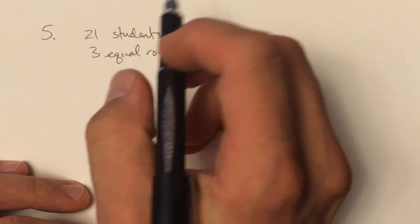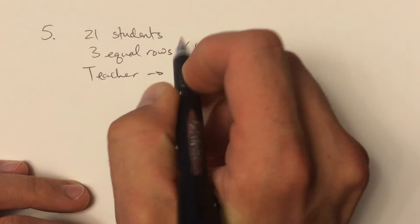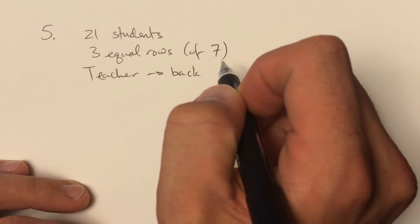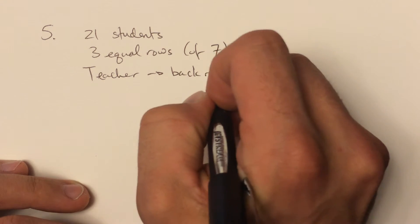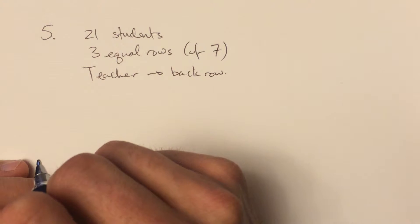And then also the teacher has to stand at the end of the back row. And so how many different ways can they be lined up?